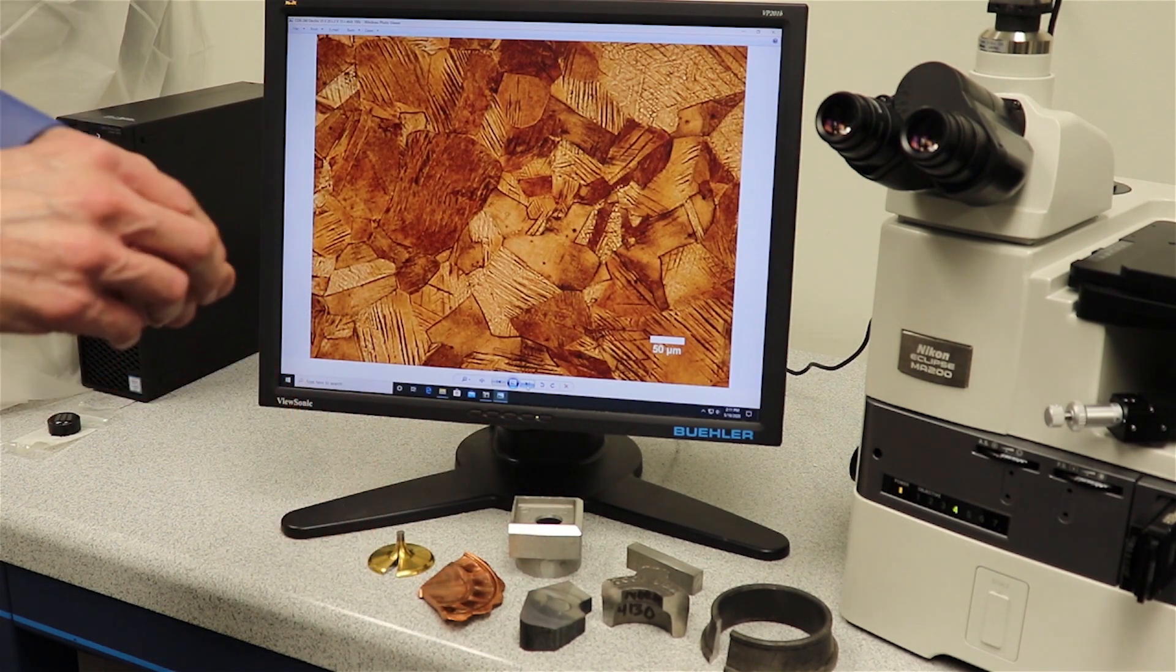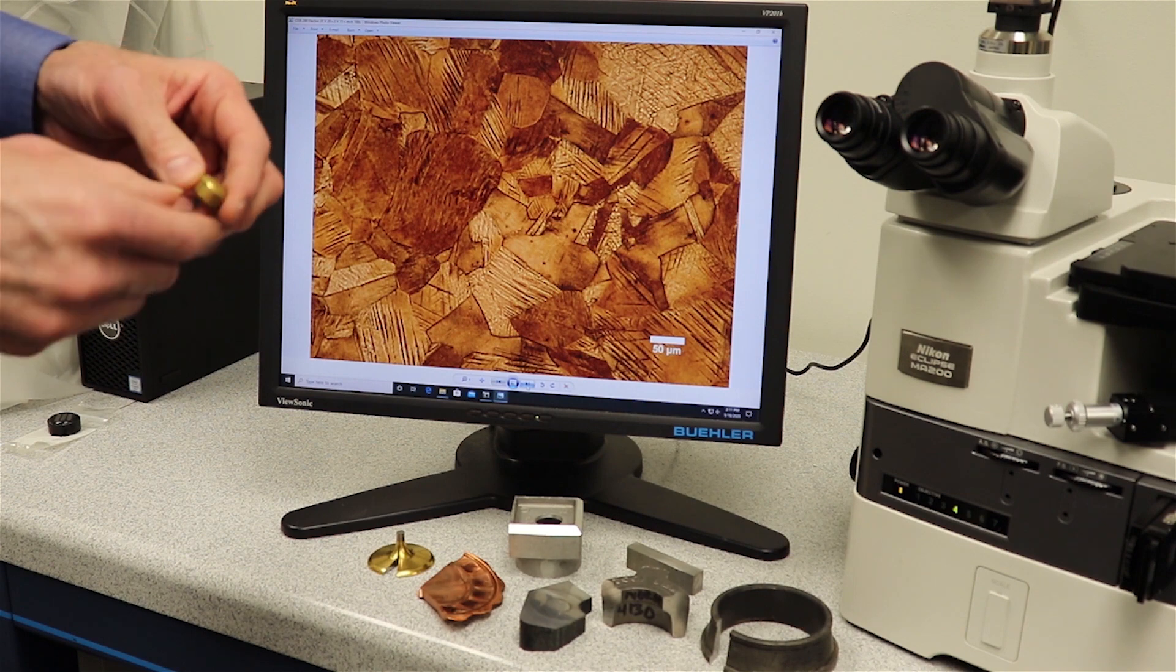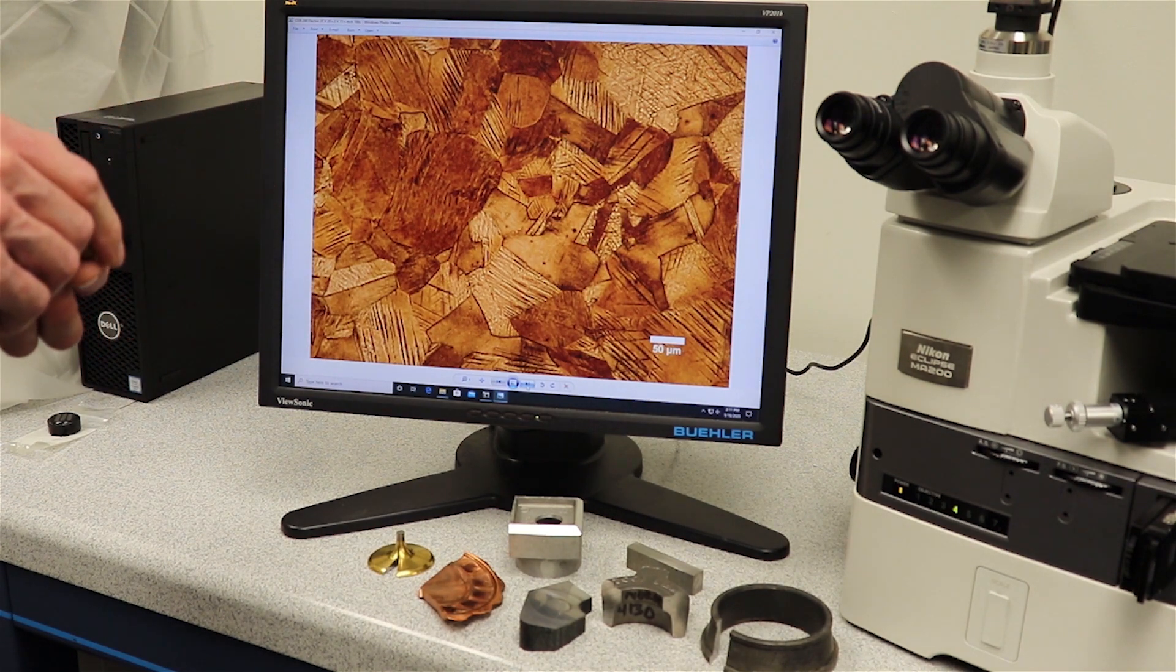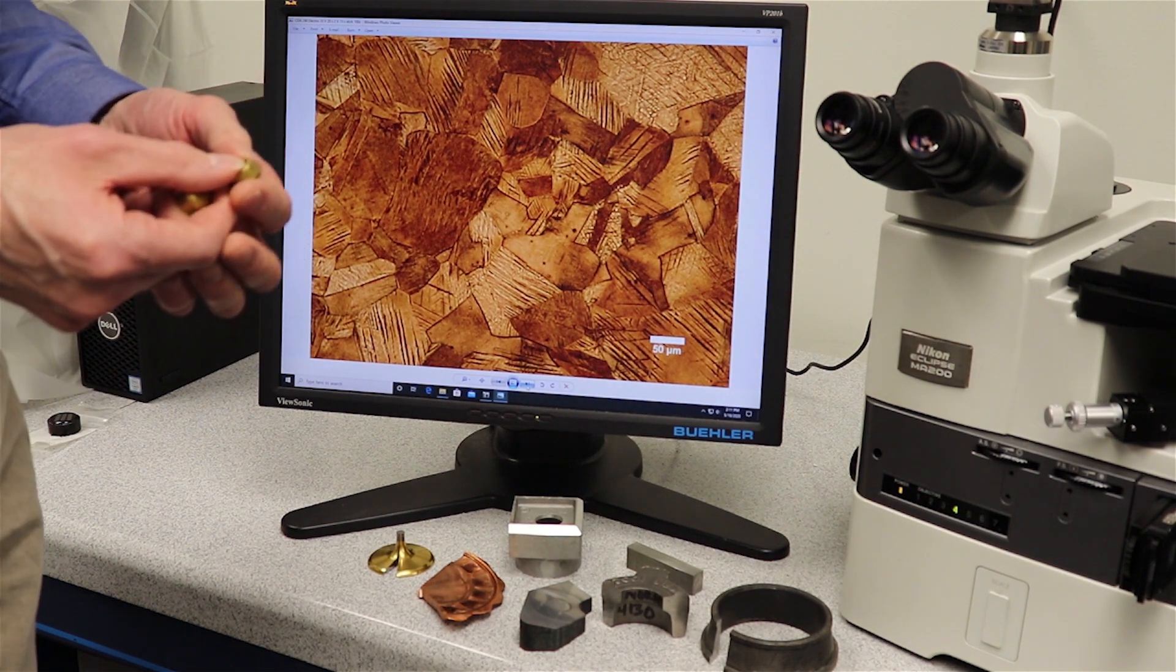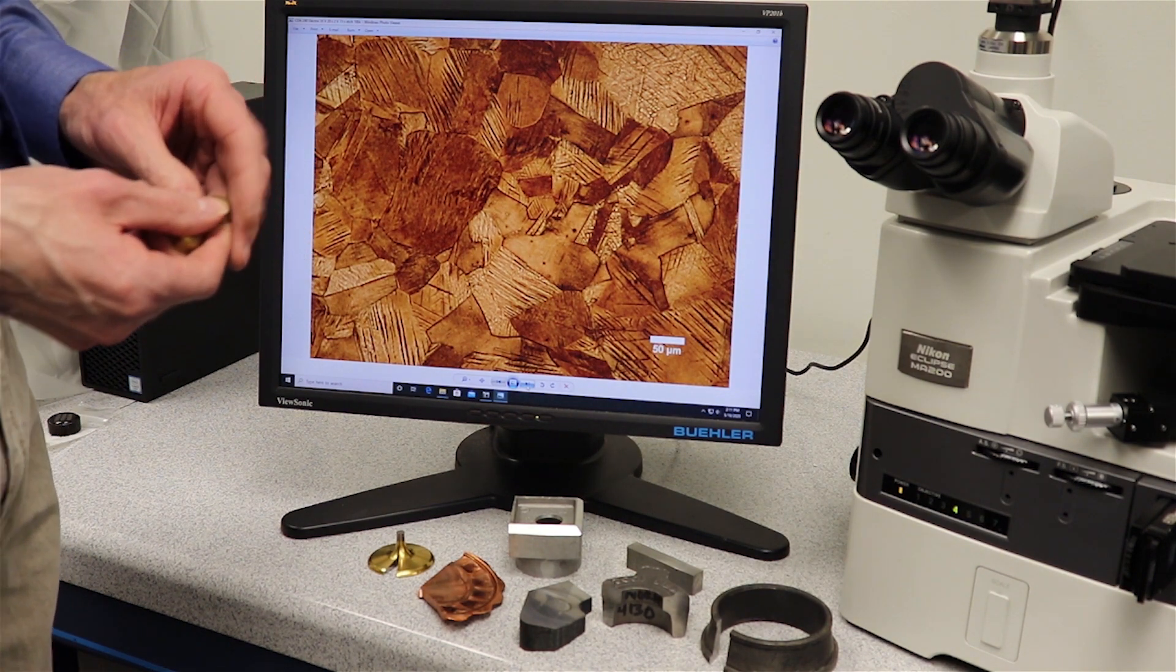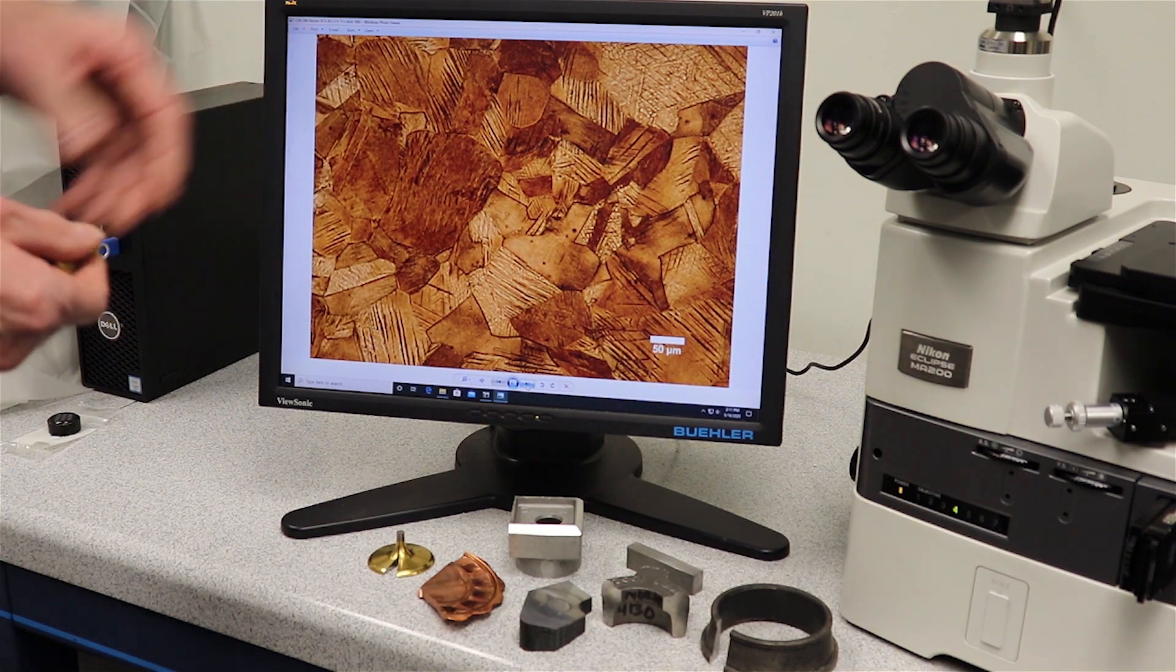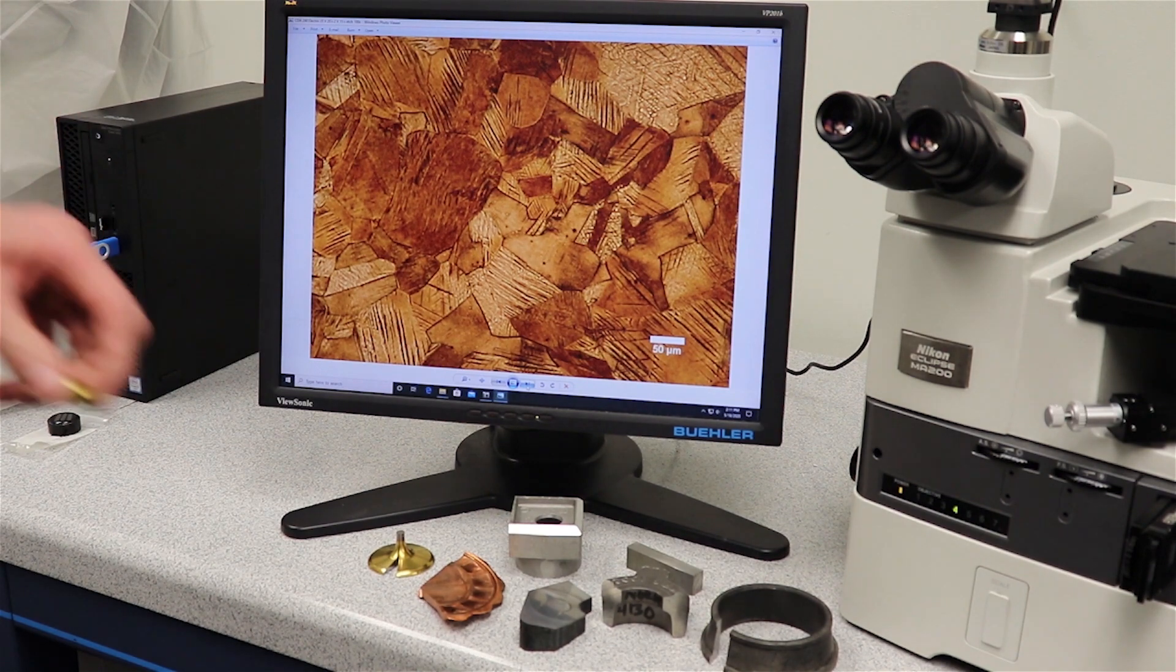We have also copper alloys. This is a CDA240 brass sample here with grain structure, very well revealed with electropolishing. This is a phosphoric acid solution that we use on this one. Again, just a period of seconds and good quality grain structure.